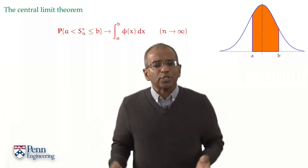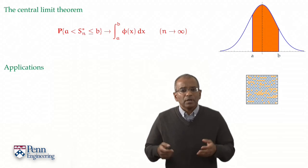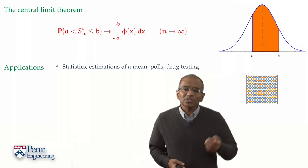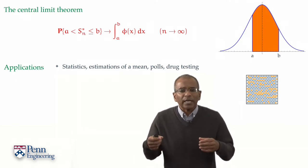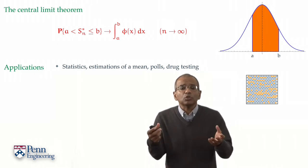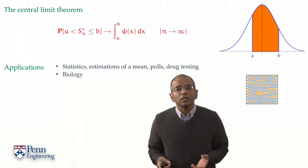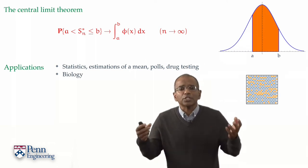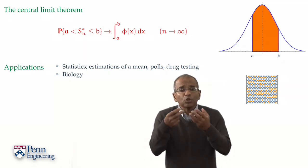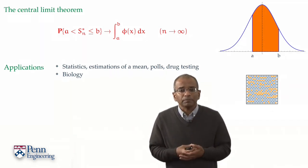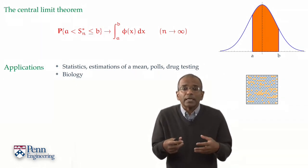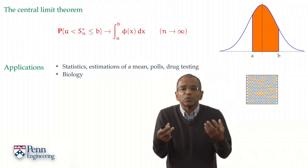We've already seen some applications in play. In mathematical statistics, starting with polls, drug testing, and more generally in estimations of a mean. The Central Limit Theorem crops up in biology — various estimates of height, weight, intelligence, and so forth are frequently assumed to have a normal characterization, presumably because underlying it is a sum of perturbations which are not quite controlled.